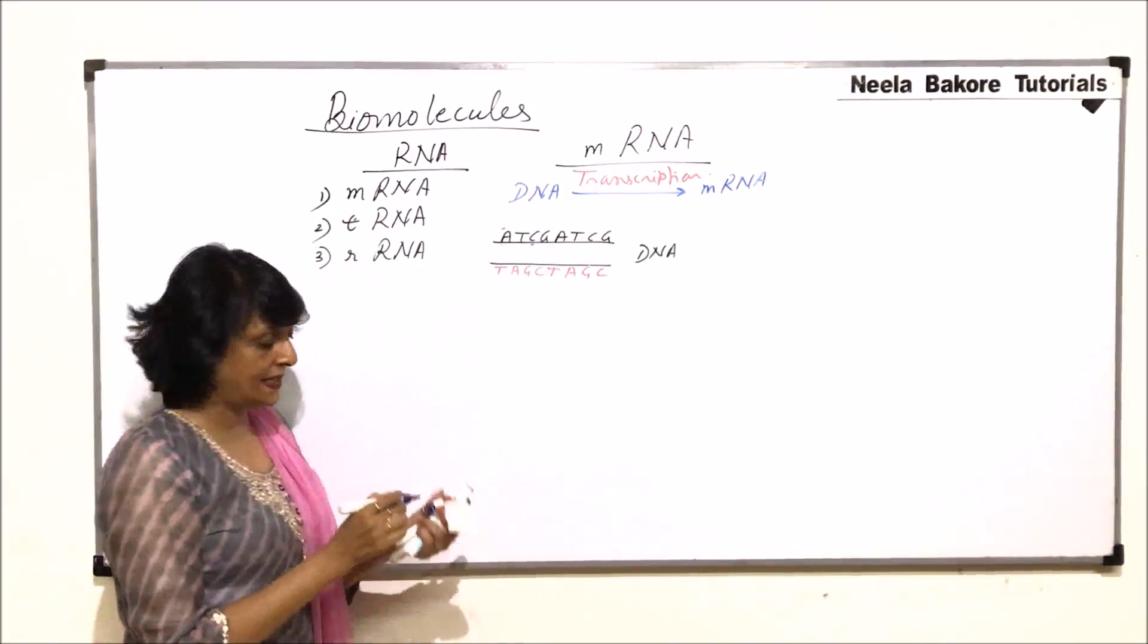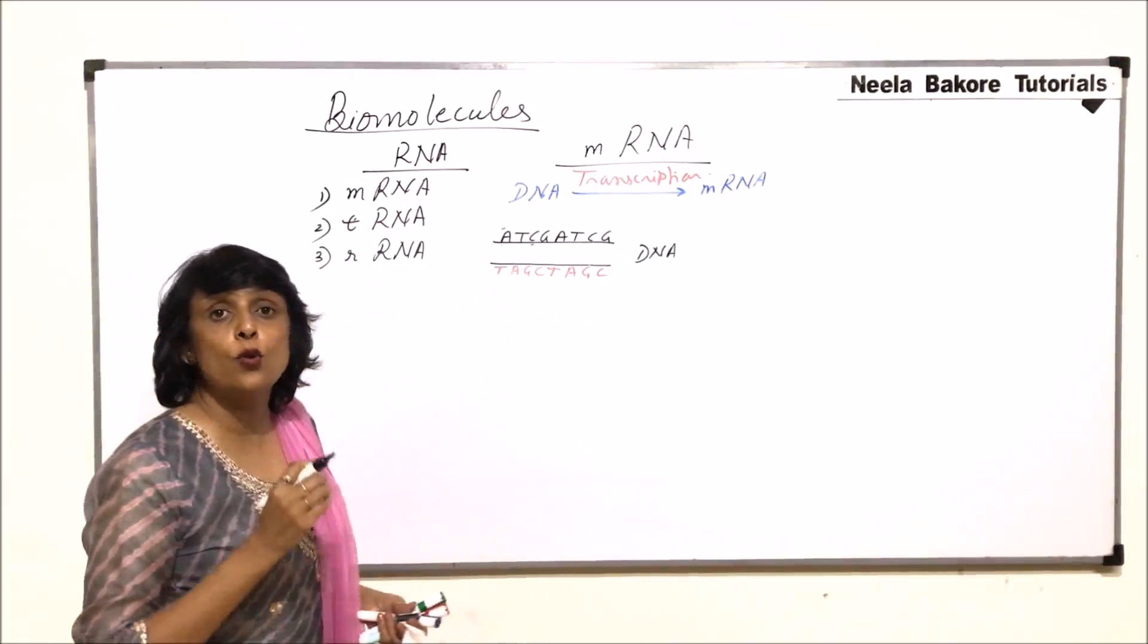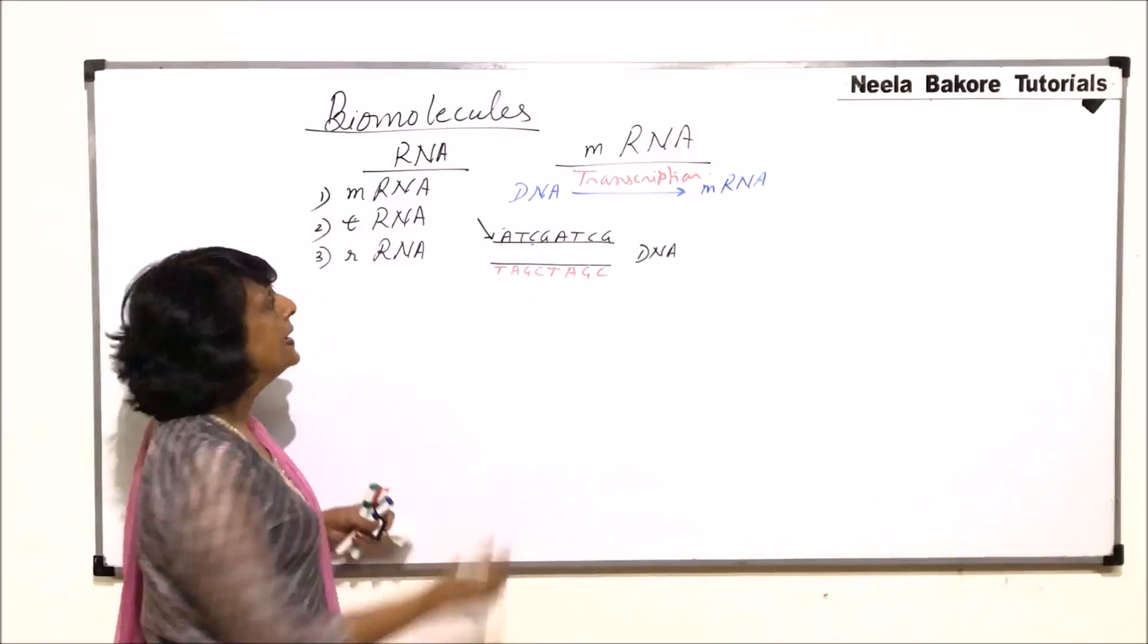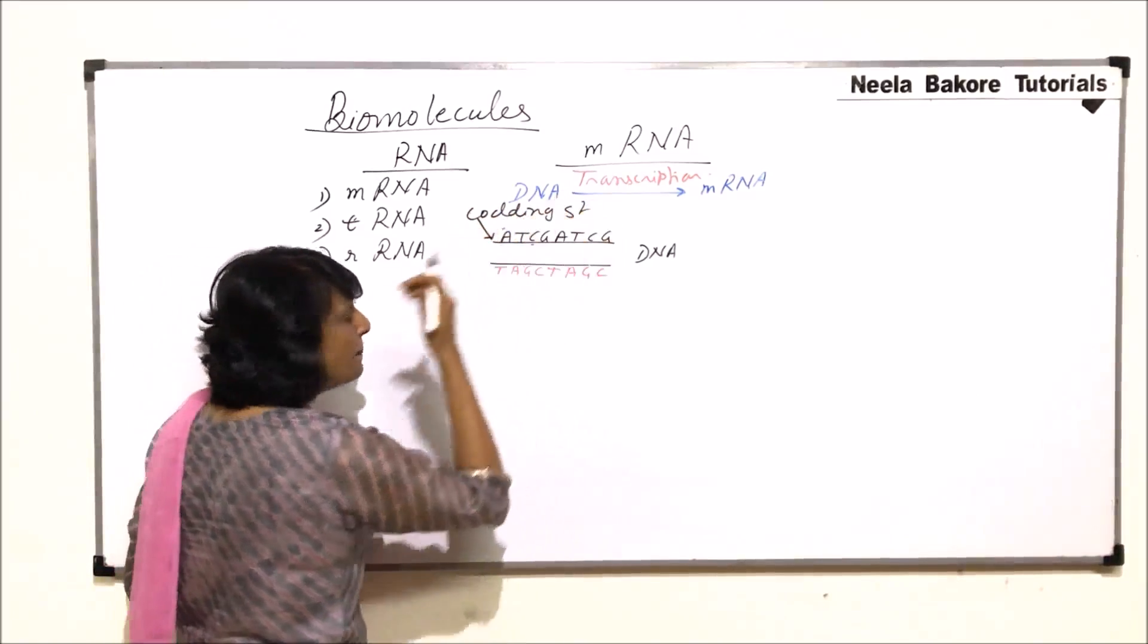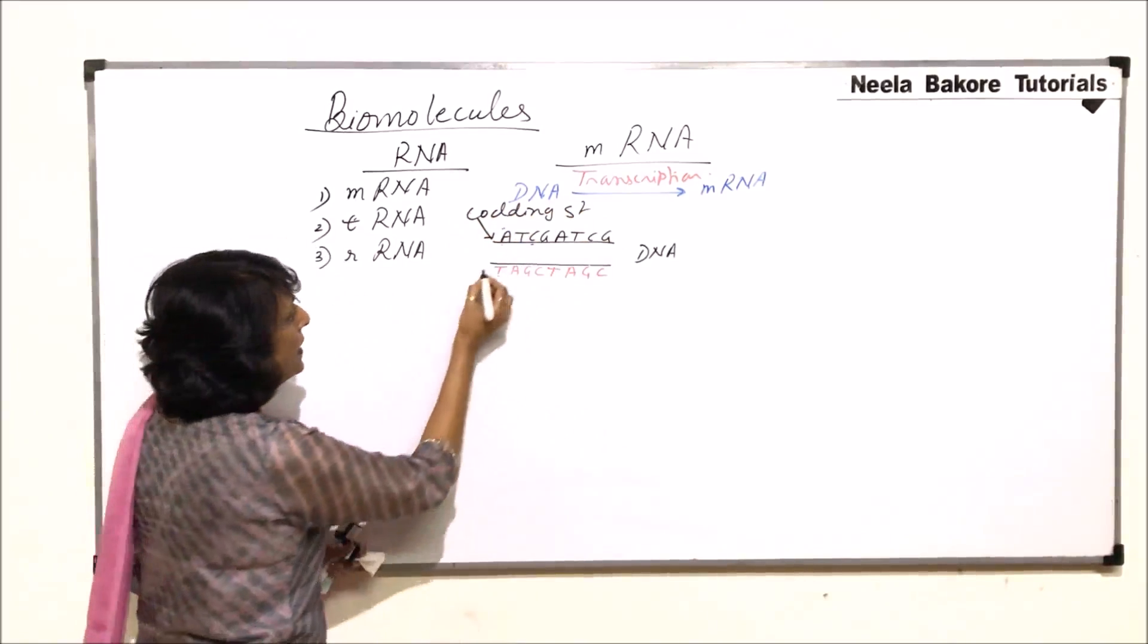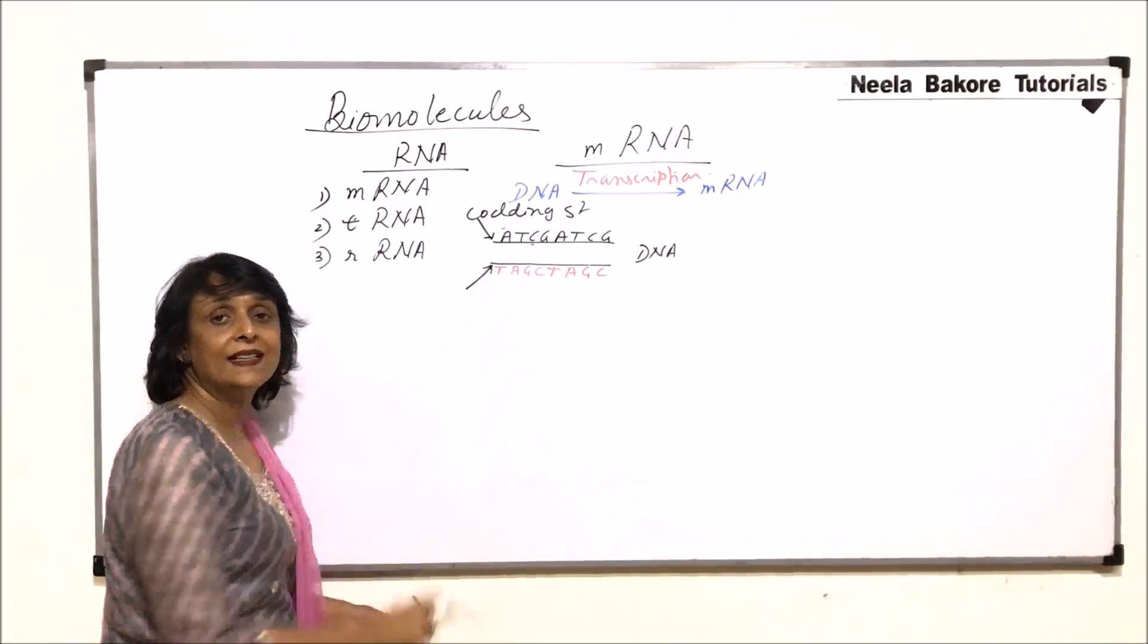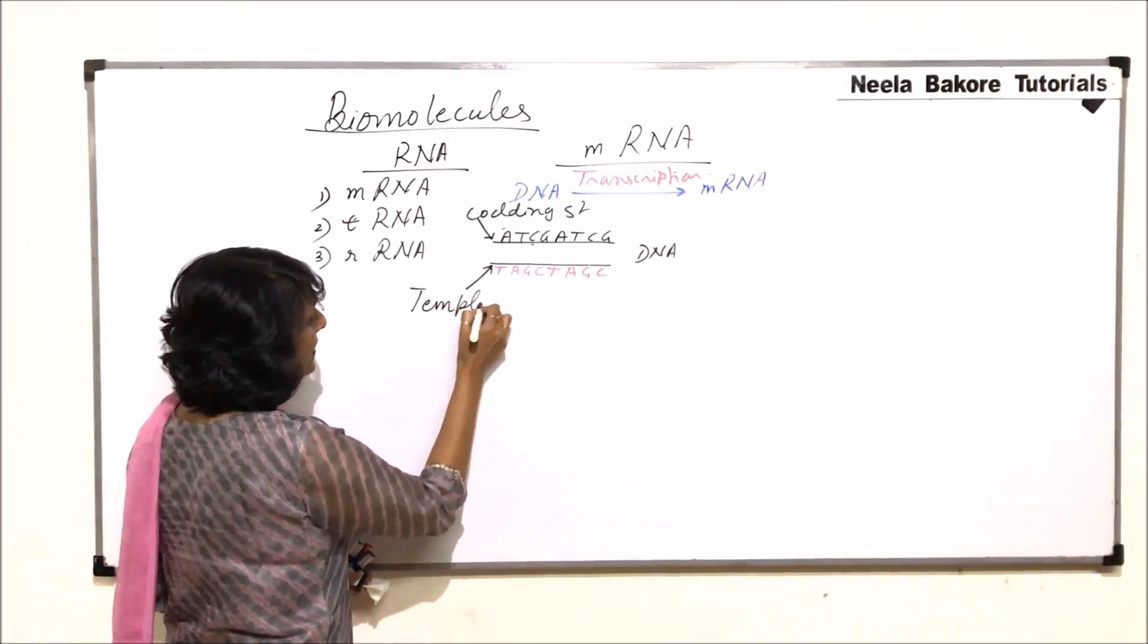So now let us name these strands. The strands or the strand whose code is required, that means we are talking about this strand, is our coding strand. But coding strand is not transcribed. This is the strand which is getting transcribed. That means this is acting as a template. So we call it a template strand.